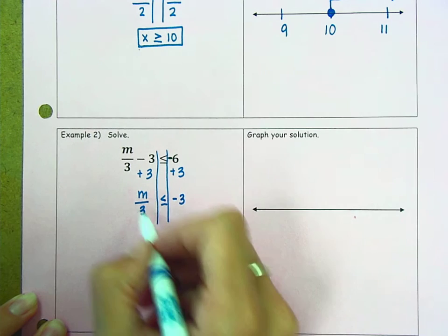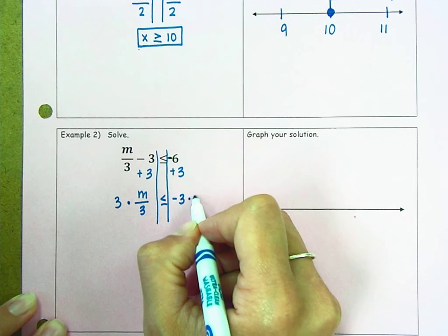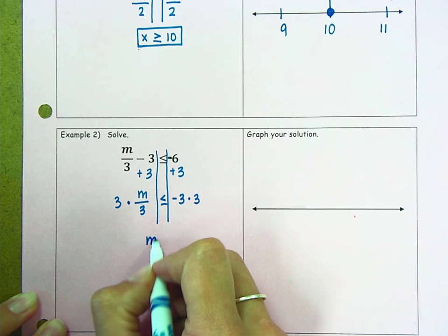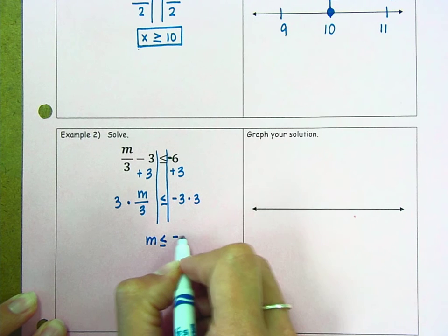Now to undo dividing by 3, we're going to multiply by 3 on both sides. So m is less than or equal to negative 9.